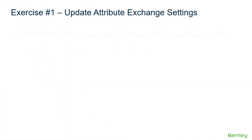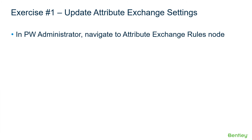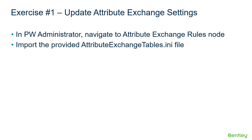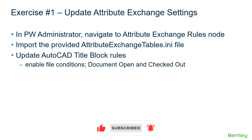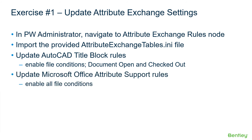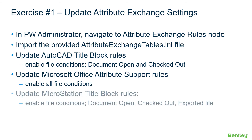Now let's look at the exercise for this course. In ProjectWise Administrator, we are going to navigate to the Attribute Exchange Rules node and import a provided AttributeExchangeTables.ini file that has been pre-populated with bindings and attribute classes. We will update the AutoCAD title block rules and enable file conditions for document open and checkout. We'll update the Microsoft Office Attribute Support rules and enable all file conditions. Then we'll update MicroStation title block rules and enable the file conditions for document open, checked out, and export.